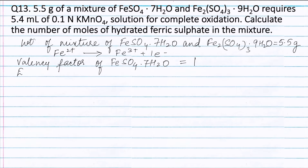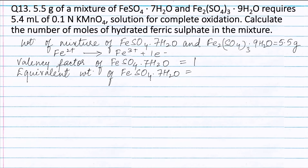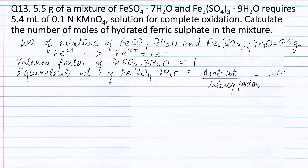The equivalent weight of FeSO4·7H2O is equal to molecular weight divided by valency factor. The molecular weight is 278 grams and the valency factor is 1, so the equivalent weight is equal to 278 grams.